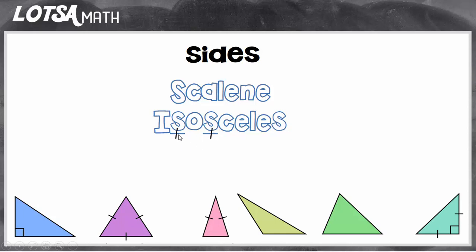Tick marks sometimes go on triangles or other shapes to show you that the sides are the same length. On the pink triangle we see a mark here and a mark here. Since the marks are the same, the lengths of those sides are the same. So this pink triangle is an isosceles triangle because it has two sides that are the same length.